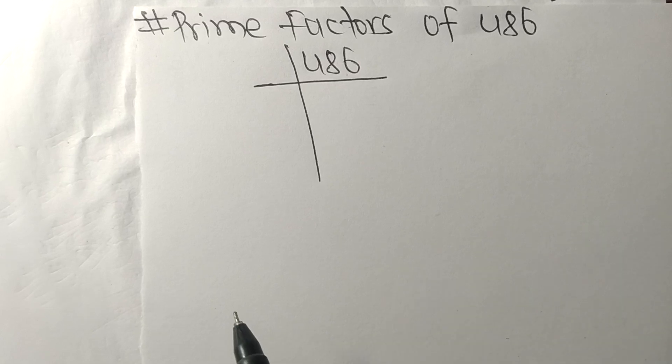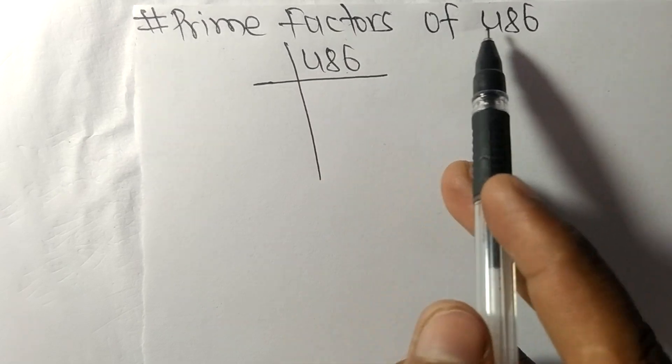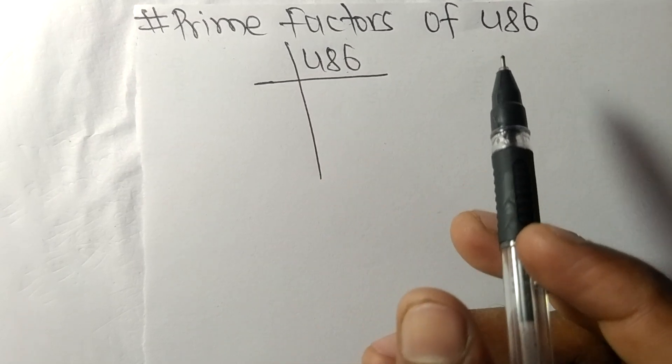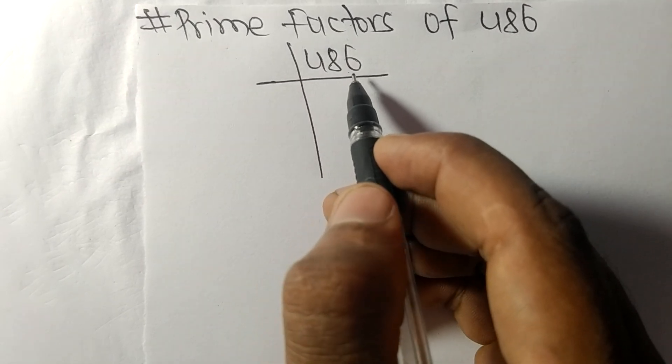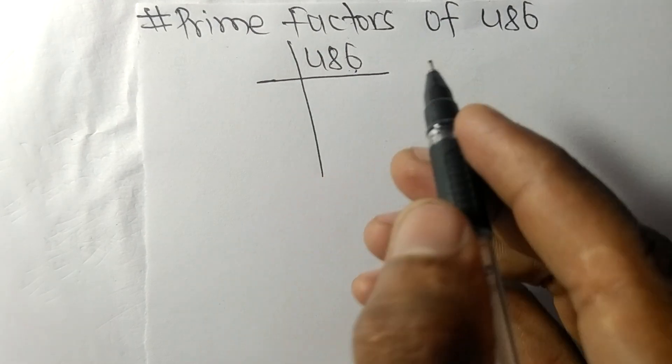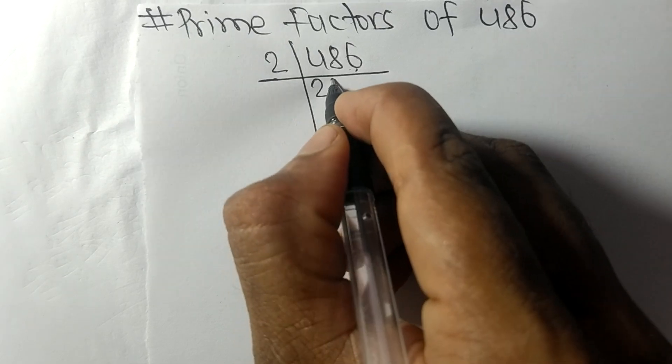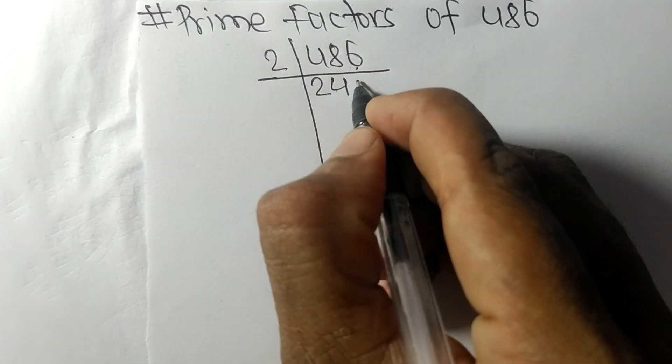Today in this video we shall learn to find the prime factors of 486. At the end it contains an even number 6, so it is divisible by 2. 2 times 2 means 4, 2 times 4 means 8, 2 times 3 means 6.